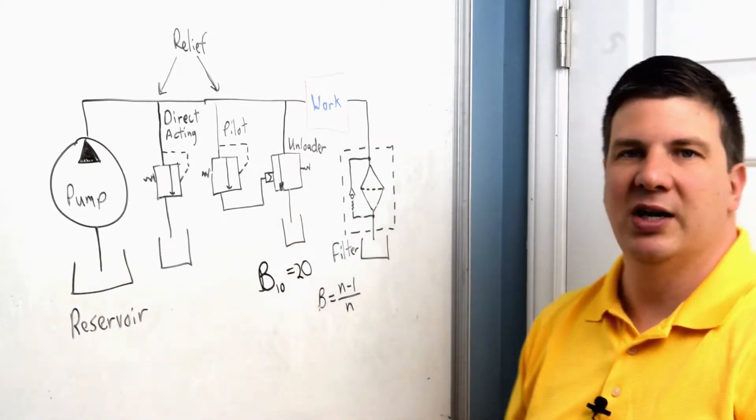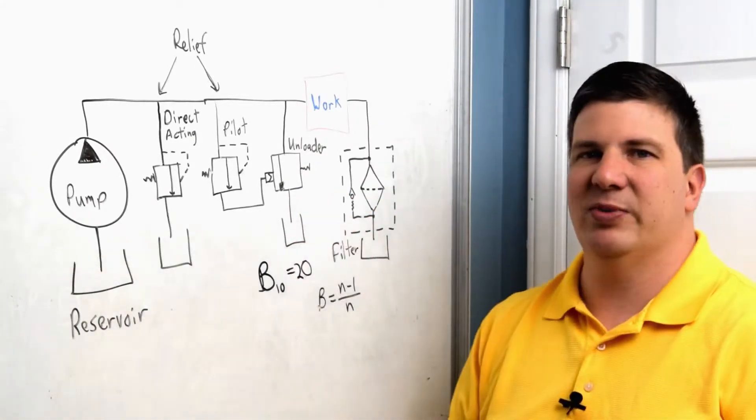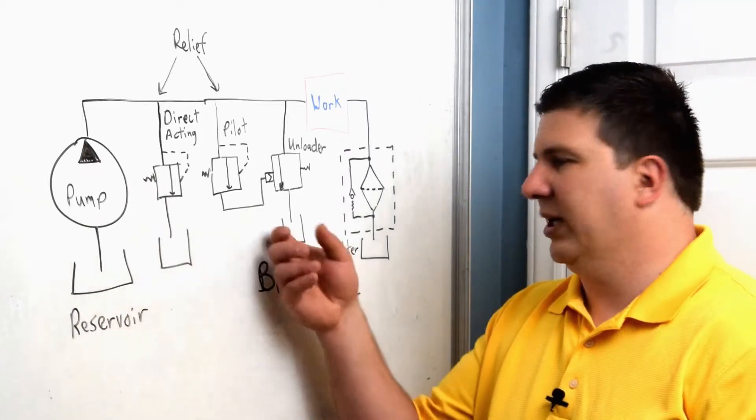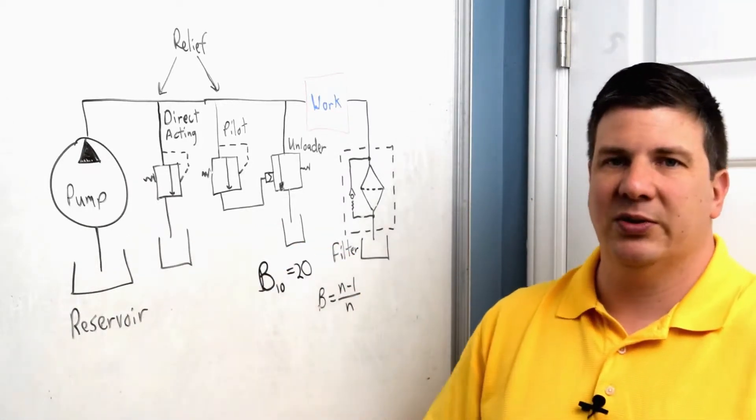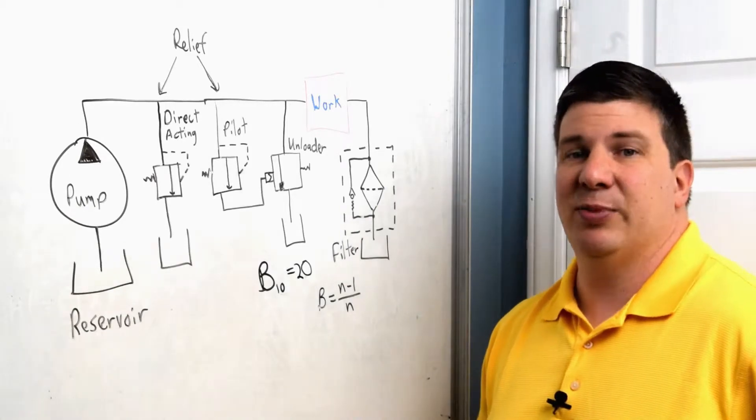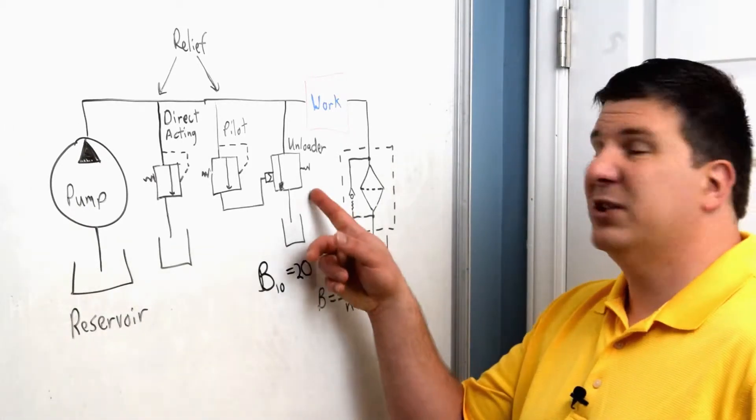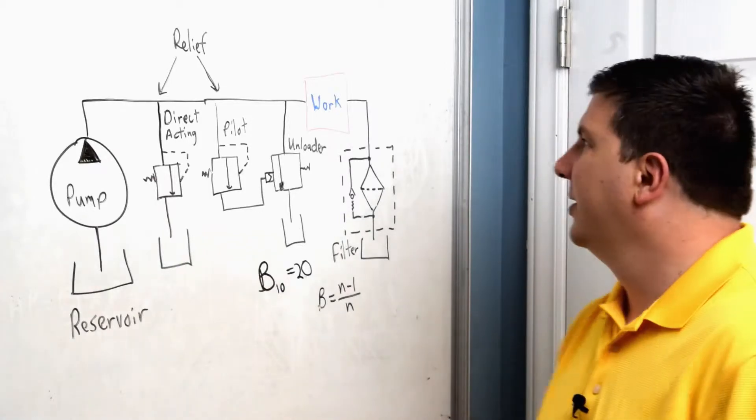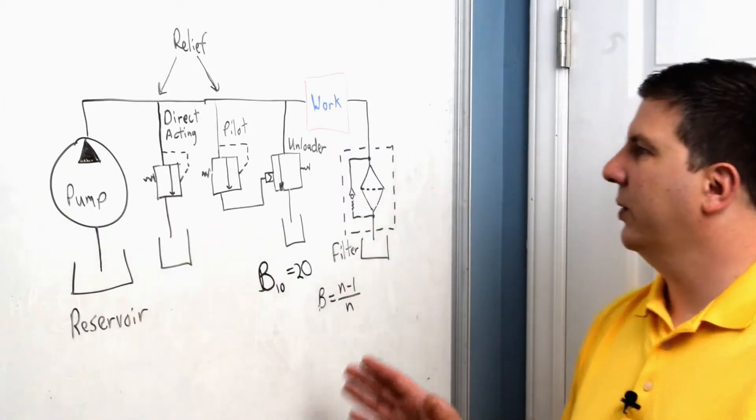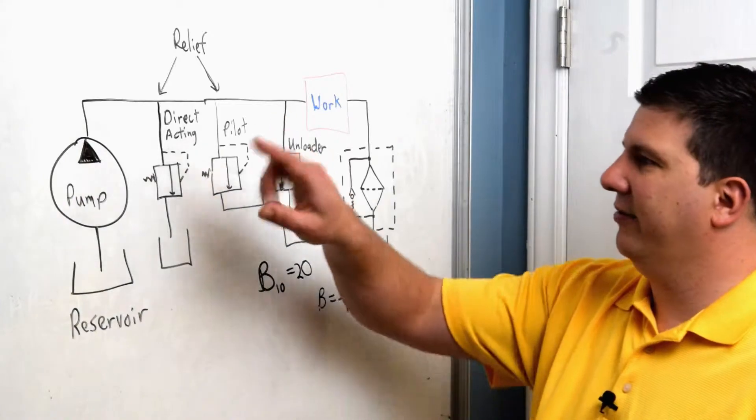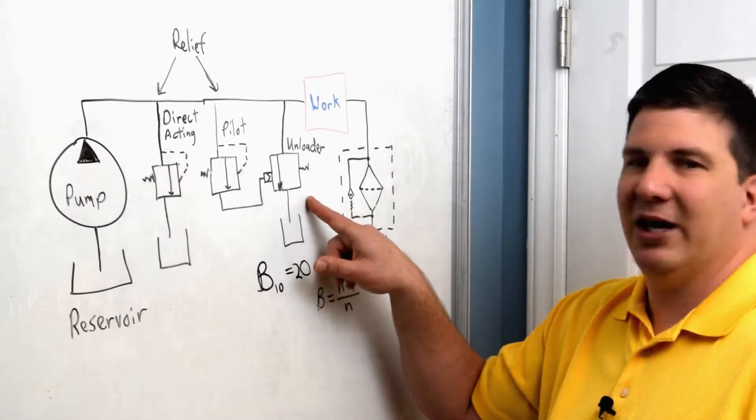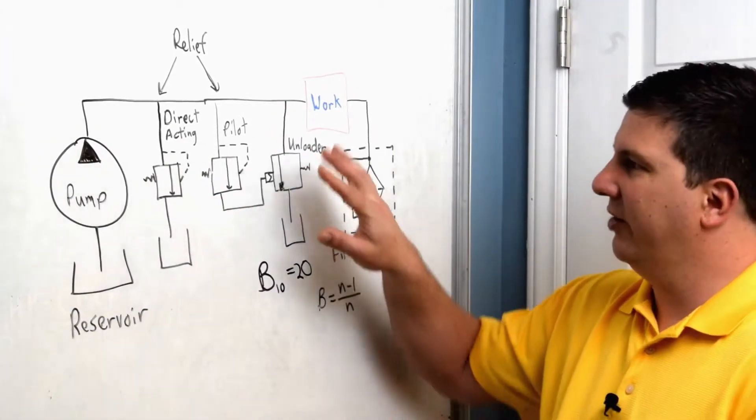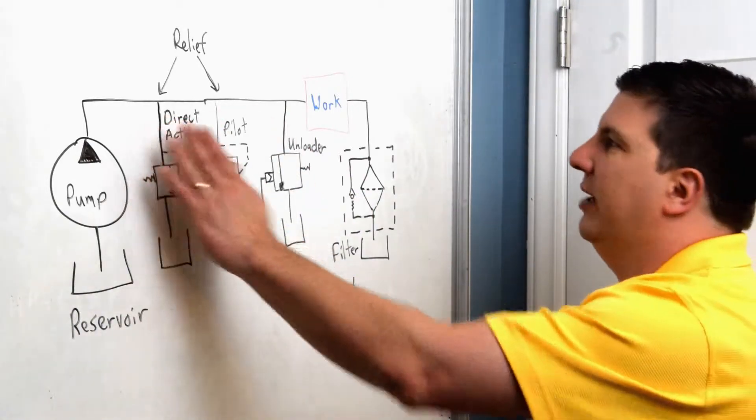So it does the same thing, but it does it with a much, much bigger hydraulic flow. We're looking at like 50 to 200, 300 gallons a minute. And it is possible that you might need several of these unloader valves to handle all your flow. So as I mentioned before, you're either going to have a direct acting or you're going to have a pilot with an unloader. You're not going to have both systems in there at the same time.